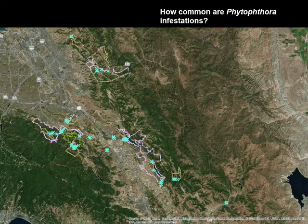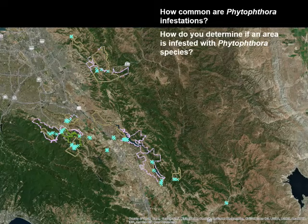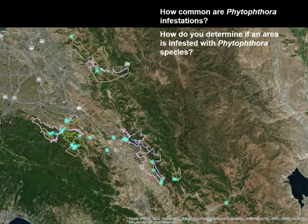So a question that comes to mind is how common Phytophthora infestations are, where we are at risk of encountering them, where we would look for them, and how do we determine whether an area might be infested with Phytophthora species. So to set some sort of baseline...